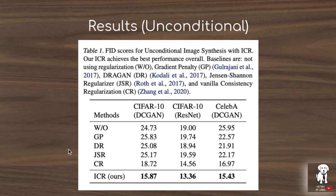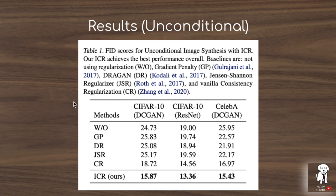A results table summarizes unconditional image synthesis on CIFAR-10 and CelebA with DCGAN and ResNet architectures. Interestingly, a bigger performance gain is seen on DCGAN than ResNet, suggesting this technique could allow using a shallower model with fewer parameters — potentially useful when computational resources are limited but you still want to leverage the GAN framework.